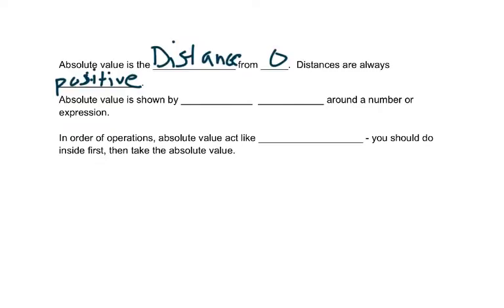Absolute value is shown by straight lines around a number or expression. In order of operations, absolute values act like parentheses. You do what's inside first and then you take the absolute value.